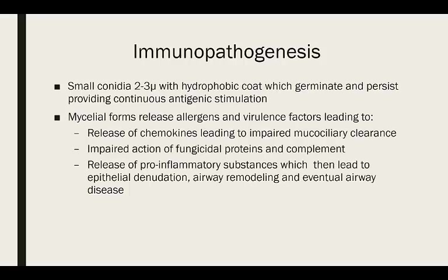The average person inhales about two to three hundred spores a day. These grow in the tracheobronchial tree, leading to release of chemokines which may cause decreased mucociliary clearance. The natural immune response with macrophages and neutrophils attempts to clear the infection, but this often leads to dissemination of cell wall components of the aspergillus mycelia. That then leads to release of pro-inflammatory cytokines, causing injury to the airway in a positive feedback mechanism, and eventually airway hyperreactivity.